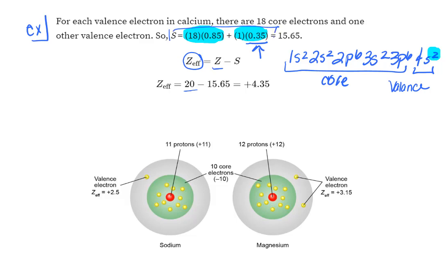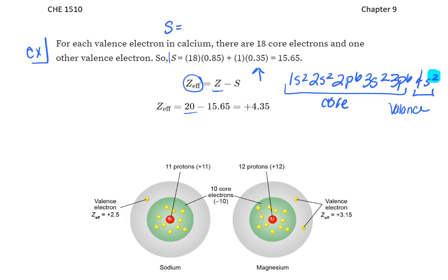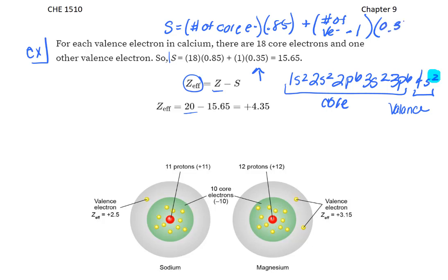So our shielding constant S equals the number of core electrons times 0.85, plus the number of valence electrons minus 1, times 0.35. Notice how we take the number of valence electrons minus 1 because we shouldn't be counting the valence electron we're trying to calculate for. Once you have your shielding constant, you can plug that in, and you get a Z-effective for calcium of plus 4.35.